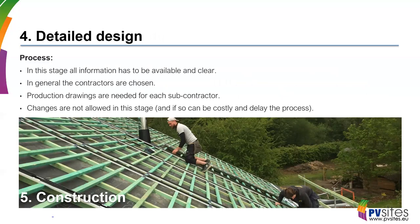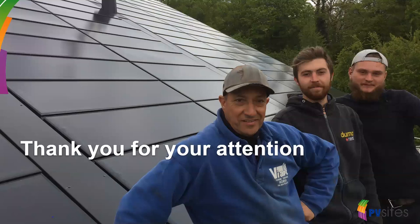The next stage is detailed design. At this point everything should be more or less clear — there should be no big changes. All contractors will be chosen and production drawings are made. For every contractor you need specific production drawings, sometimes made by the subcontractor and checked by the architect. Changes are not allowed at this stage — if they occur, it can be very expensive and delay the process significantly. Then comes construction, which concludes the design process overview.